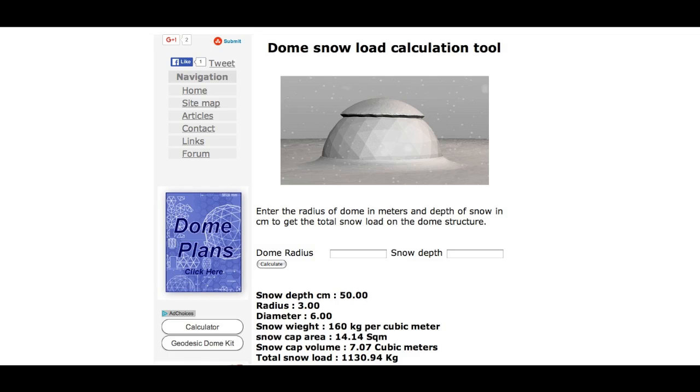Right, next we'll have a look at the snow load and wind load pages on the J-Dome website. I'll leave a link in the description. Just for this example, we're going to use a snow depth of 50 centimeters on a six-meter diameter dome. And if you look at the figures at the bottom there, it says we've got a total snow load of 1,130 kilograms, which is, let's say for argument's sake, about a ton.